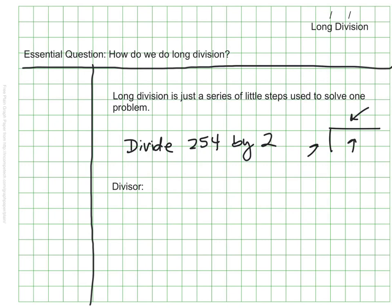The first is divisor. Remember, the divisor is the number that does the dividing. The next word is dividend. Remember that the dividend is what gets divided.